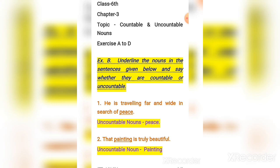Good morning and welcome to students in an English video class. Today we are going to solve exercise B to D of chapter number three, that is countable and uncountable nouns. Exercise A I have not given here because it is related to the picture on page number 17 in your book, so you can do it by your own. You have to only find out five countable and five uncountable nouns from your book.